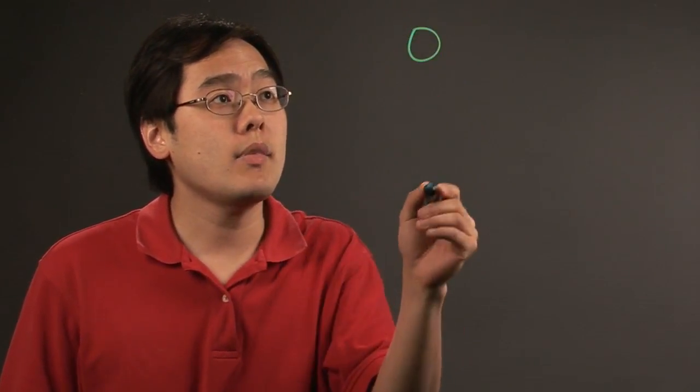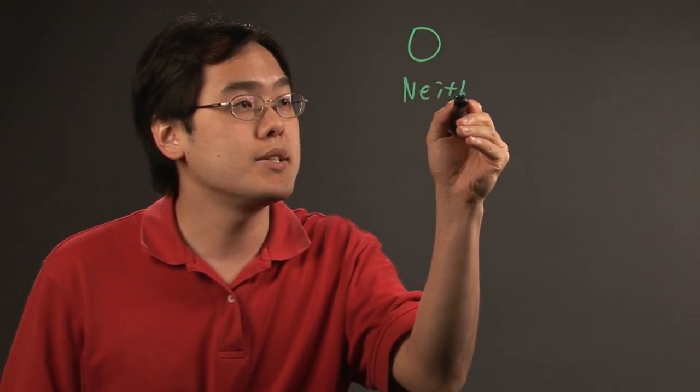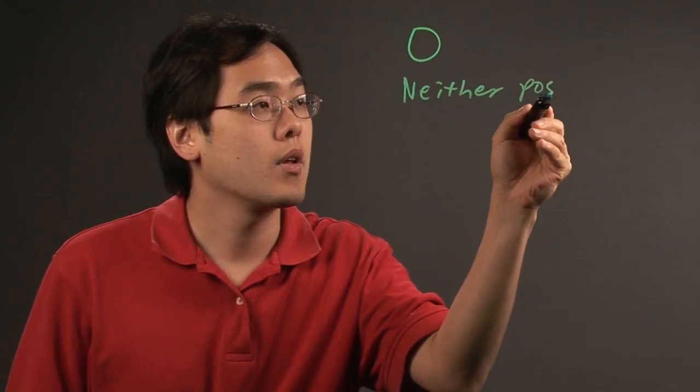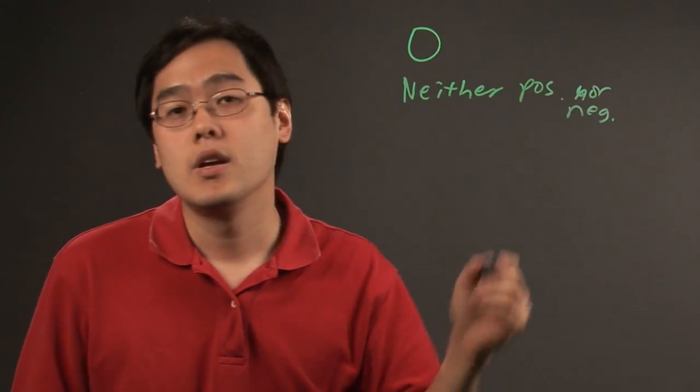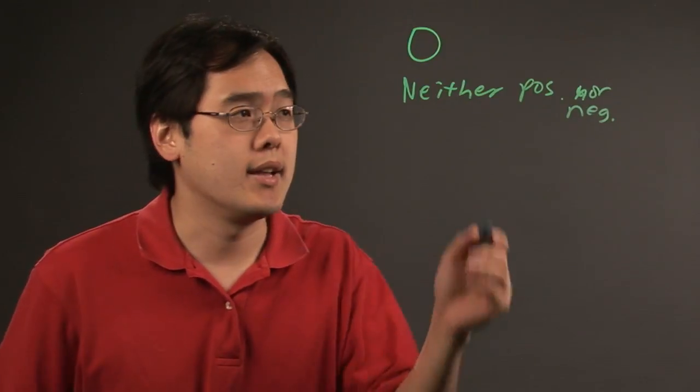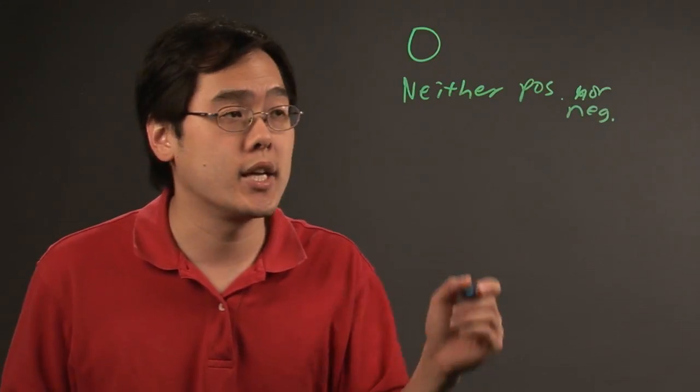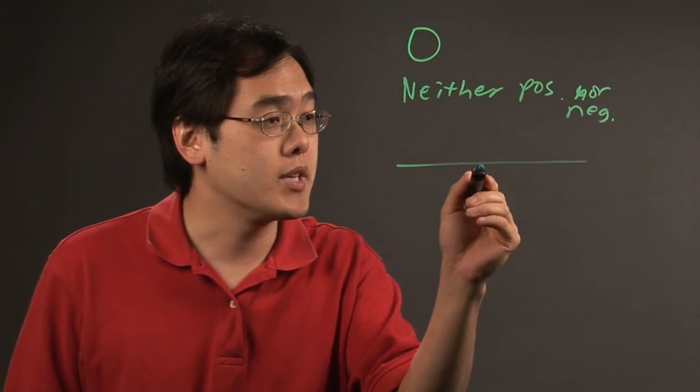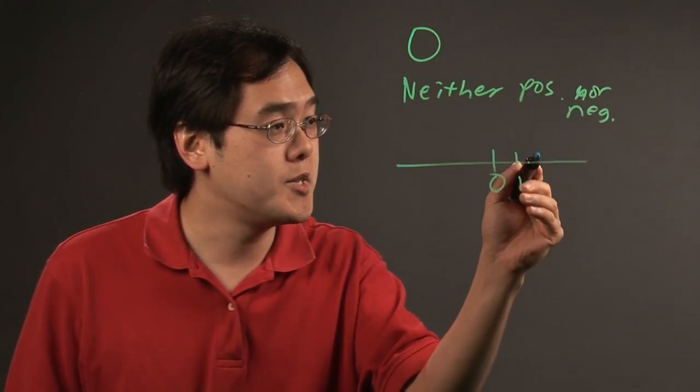For one, zero is a number that's neither positive nor negative. Sounds a little strange that that's a great thing, but zero acts as a dividing line between the positive and negative numbers. On a number line, if you have the number zero, it divides between the positive and negative.